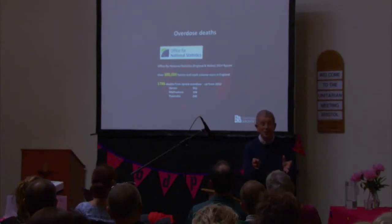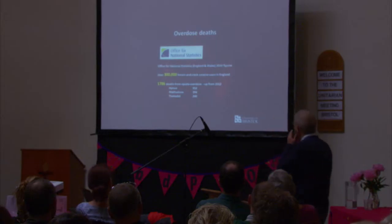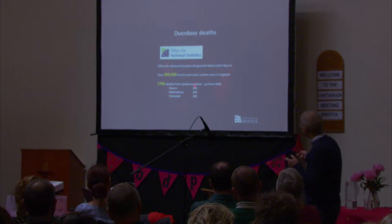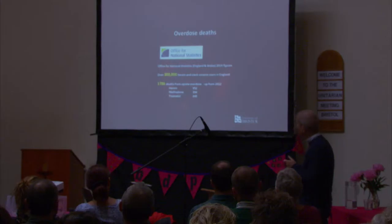I was really asked to talk about polydrug use and how it contributes to overdose deaths. These are the latest national figures available from 2014, and there's been an increase in heroin deaths — in opiate deaths, or deaths where opiates have been mentioned on the death certificate. Nationally it's largely heroin, with a contribution from methadone and tramadol, plus some other opiates.